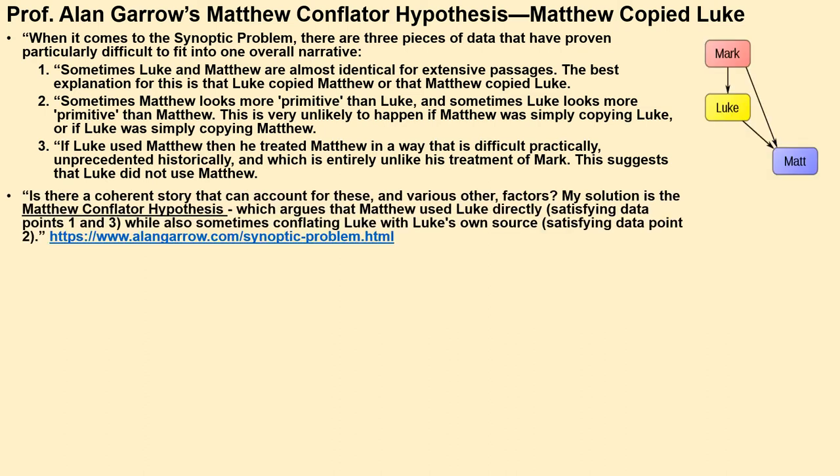Quoting from Alan Garrow's article on the synoptic problem: his solution is the Matthew Conflater Hypothesis, which argues that Matthew used Luke directly. This satisfies data points one and three, while also sometimes conflating Luke with Luke's own source — satisfying data point two. Diagrammatically: Mark has priority, Luke copies from Mark, then Matthew copies from both Luke and Mark. According to this hypothesis, Matthew is conflating Mark and Luke's gospel together.